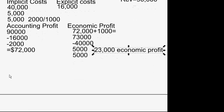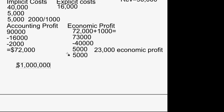Suppose absolutely nothing has changed except a real estate agent comes and says: 'Hey Farmer Brown, the city around you is growing and that land you paid $100,000 for — I bet you could sell it now for one million dollars.' Farmer Brown says: 'Really? But an economist told me I'm making $23,000 in economic profit, which means I'm doing better doing what I'm doing than anything else. So I need to keep farming.' Well, that's not true. This is a game changer.